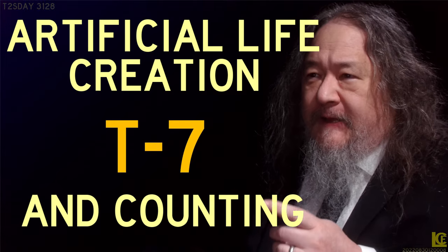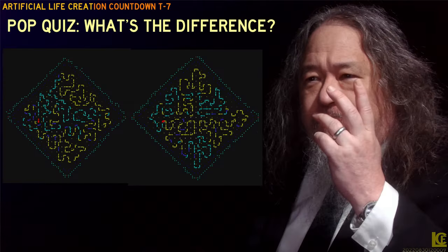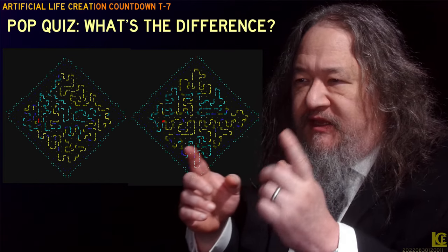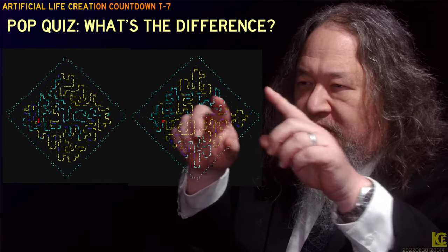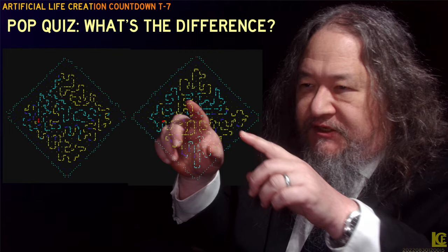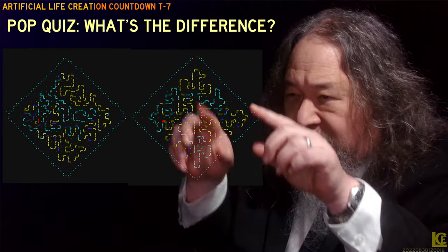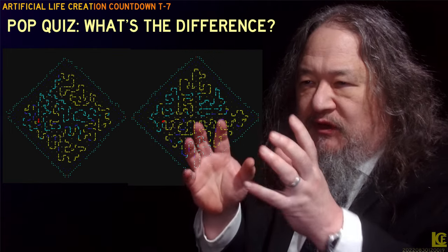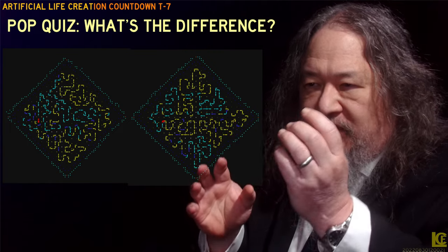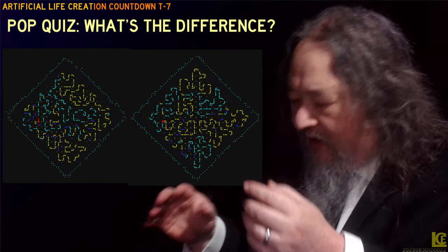Hey folks, welcome to the Artificial Life Advanced Class. So here's the pop quiz. What's the difference between these two diamonds? I'm focusing on the pocket chain, the squiggly loop inside of them. How are the layouts of the squiggles different on the left and the right?